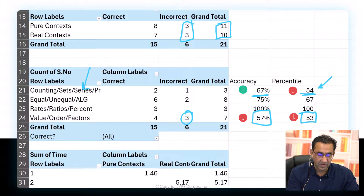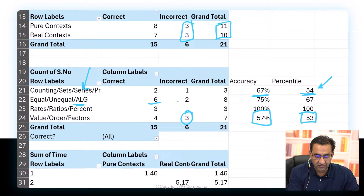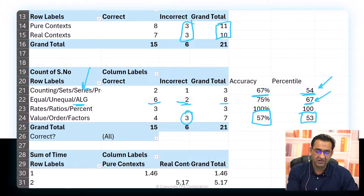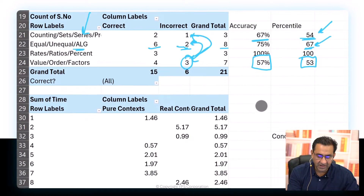In inequalities and algebra, the student had eight questions served with two wrong, yet only achieved a 67th percentile ability estimate — indicating that the value, order, and factors questions may be hurting the student in this area as well. I would truly focus on value, order, and factors.